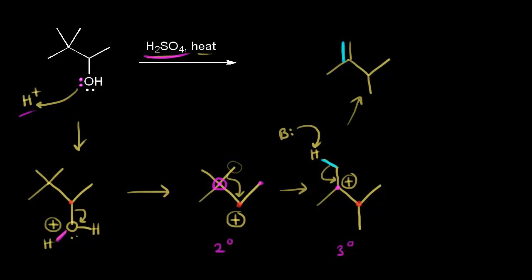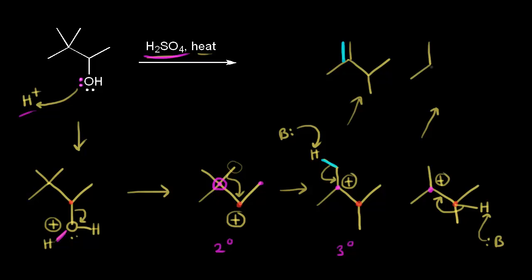What if we took a proton from a different place? Redrawing the carbocation: the carbon in magenta has the plus one formal charge, and the carbon in red is adjacent. If we take a proton from the carbon in red instead, those electrons move in between the magenta and red carbons to form a double bond — giving us a second possible alkene product.